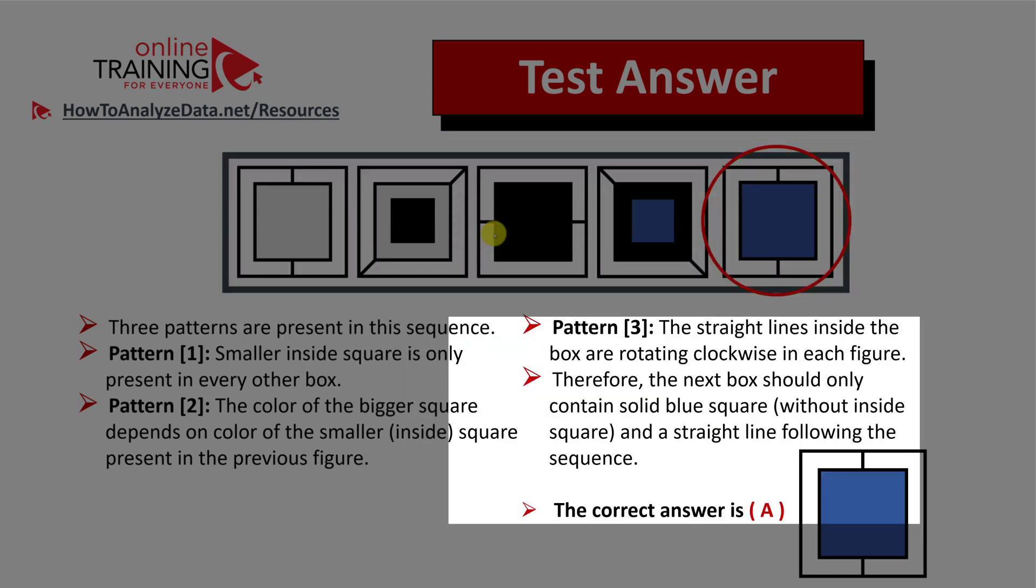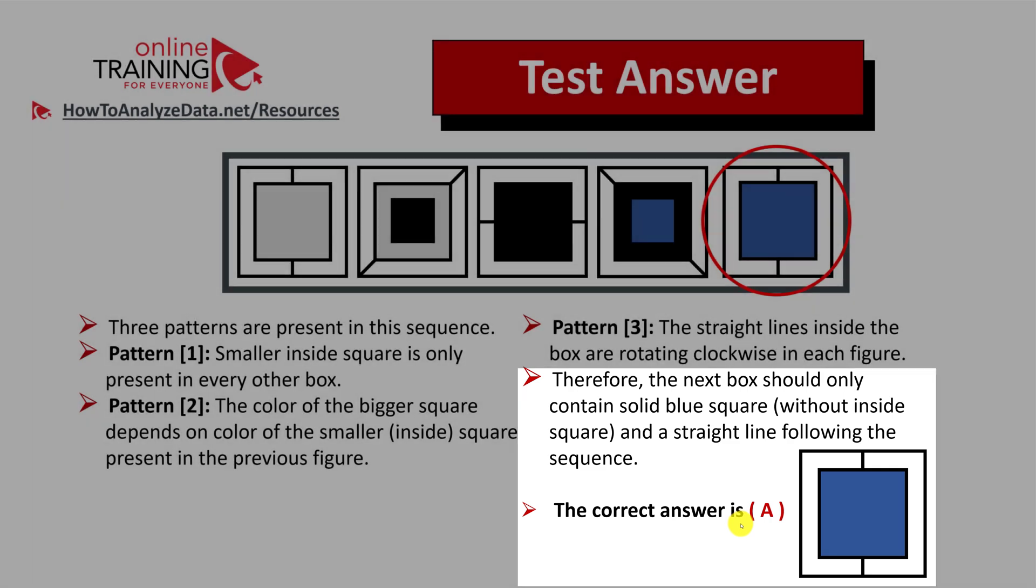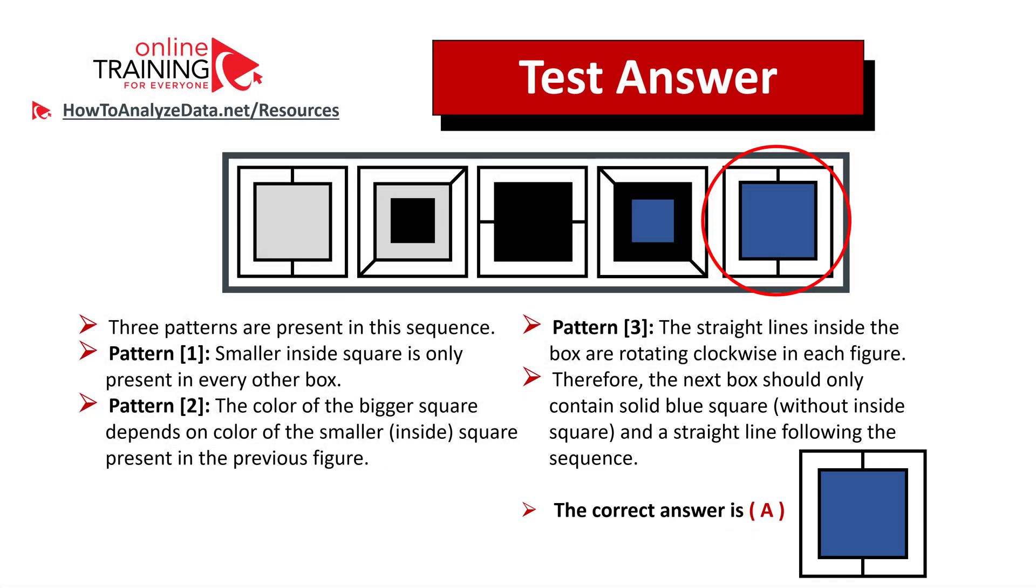So based on this information, you can see that the next square should only contain a solid blue square without an inside square and a straight line following the sequence. This leads us to the correct answer for this particular question being choice A. Hopefully you've nailed this question and now know how to answer similar problems on the test.